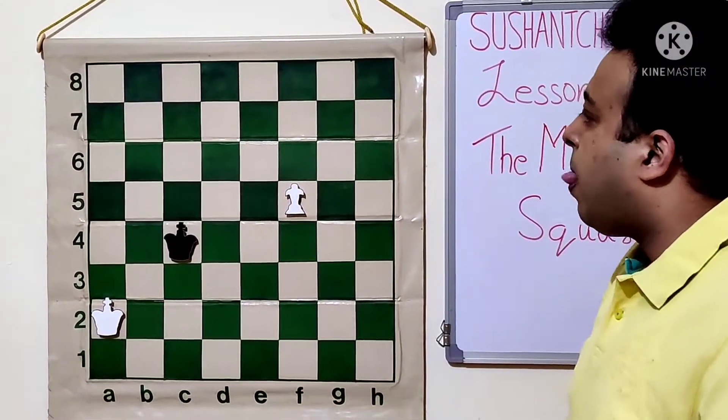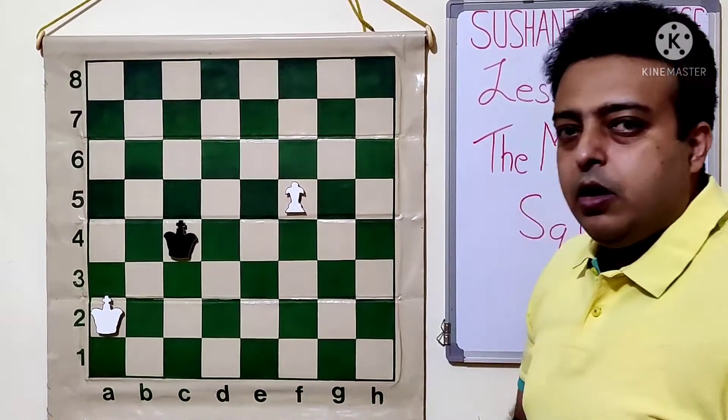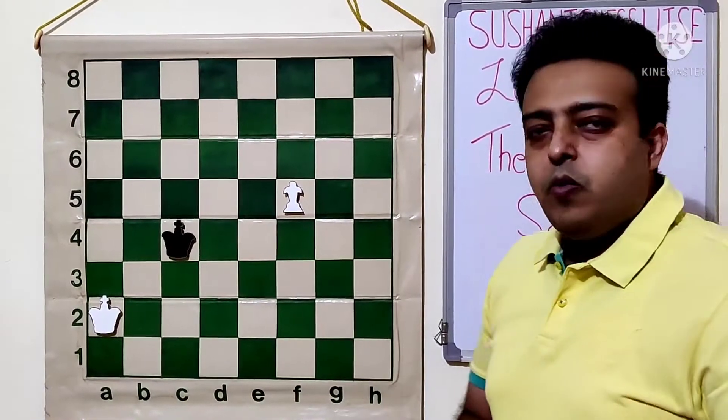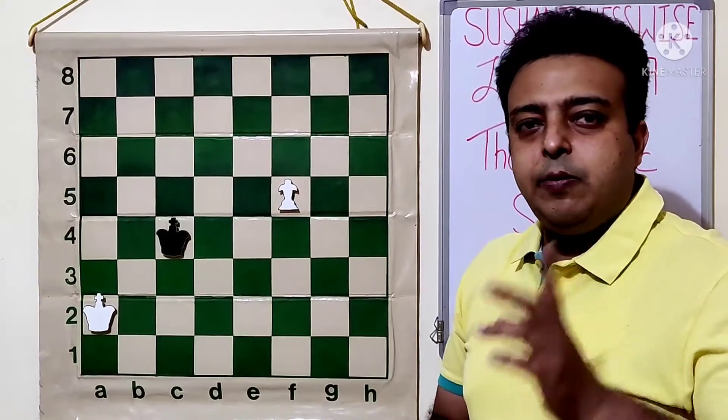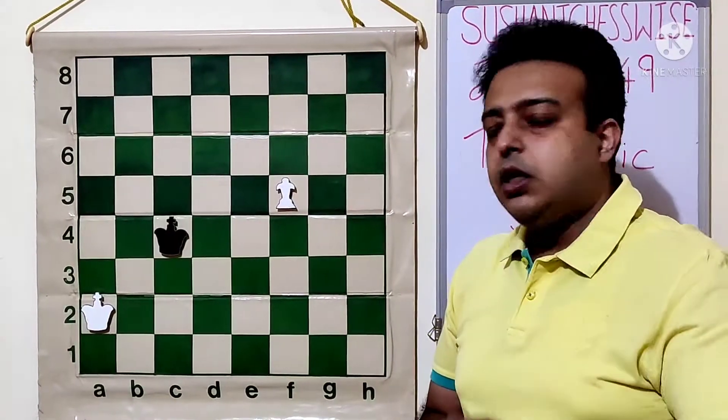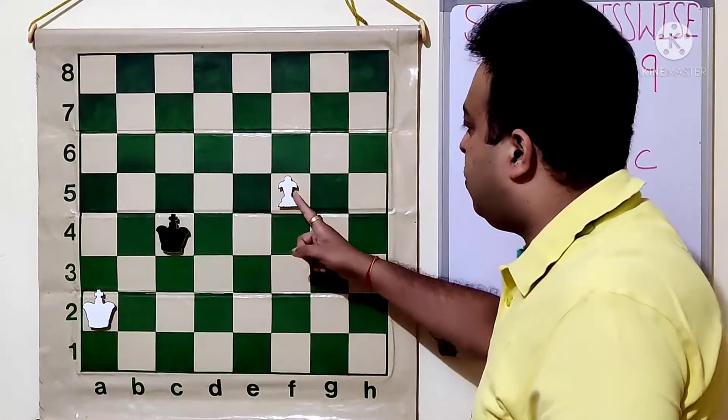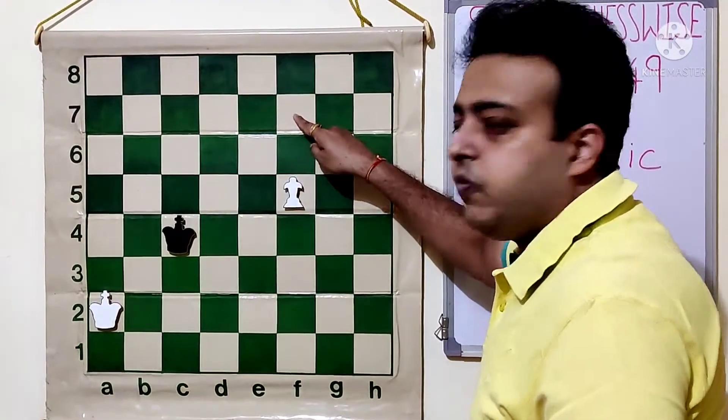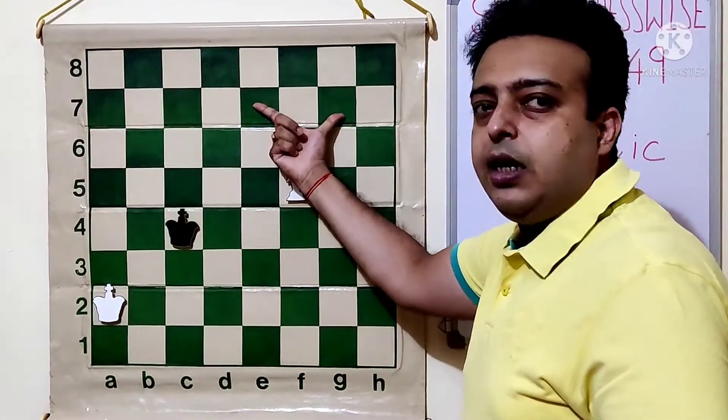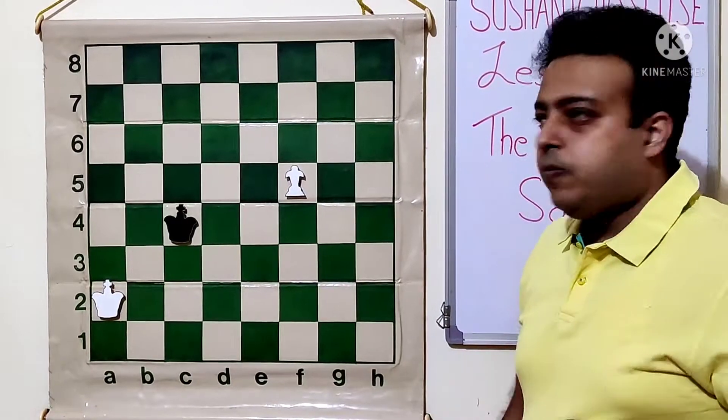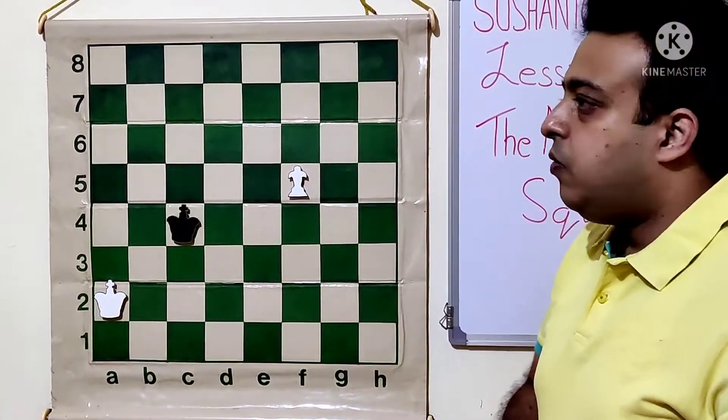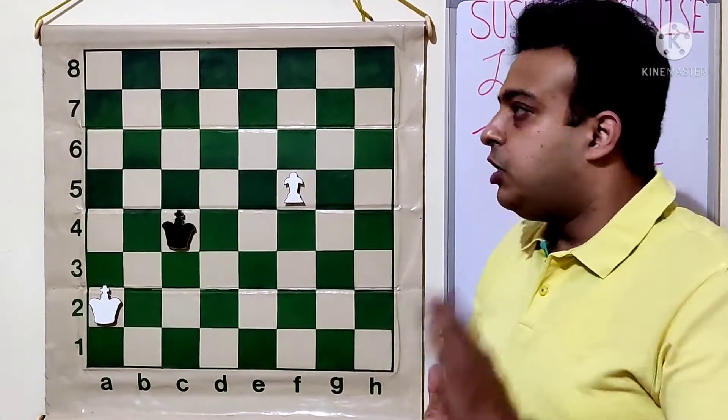How to identify when a king can stop the opponent's past pawn. So let's look at this position. White has got a past pawn. A past pawn is a pawn where the opponent doesn't have any pawn in front of it and on its adjoining files. So this pawn is able to pass without being obstructed by opponent's pawns.